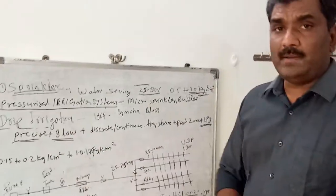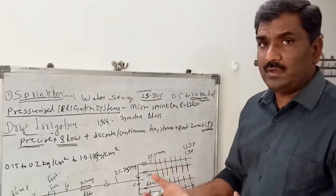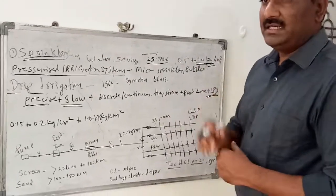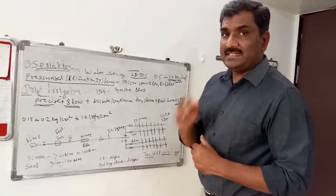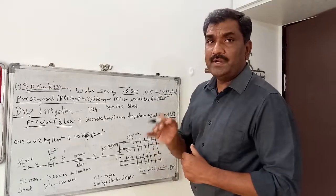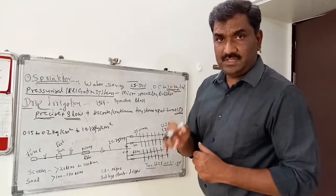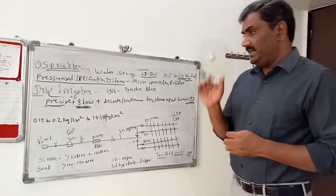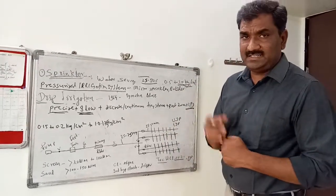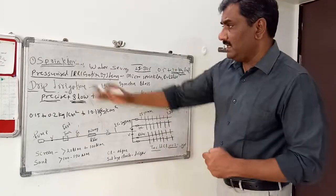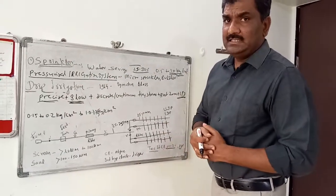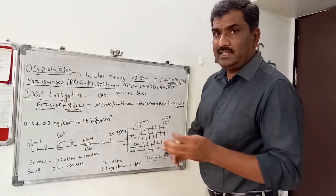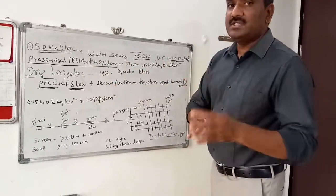Precise means applying only what is necessary — not more, not less — water according to the need of the crop. The required amount of water is decided at the point of application. Slow means the speed of water application is less than the infiltration rate of the soil, so there is no loss through runoff. In sprinkler systems, the application rate must also not exceed the soil infiltration rate. In drip irrigation, that runoff loss is minimized.